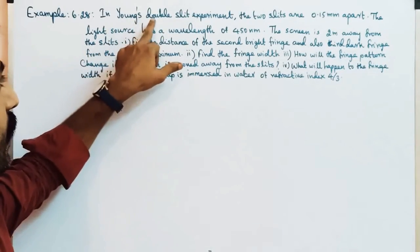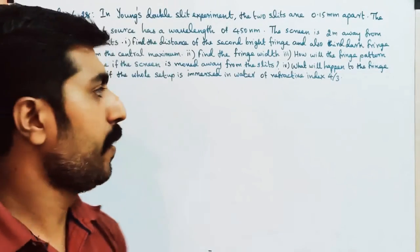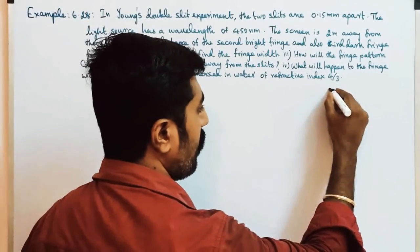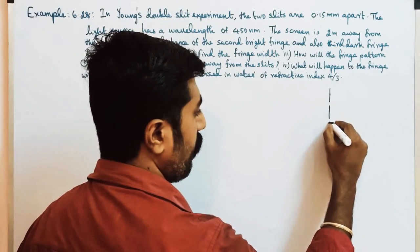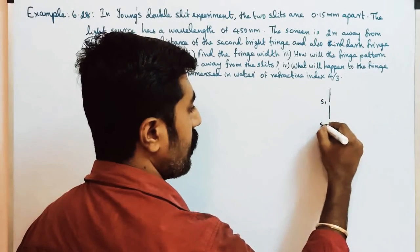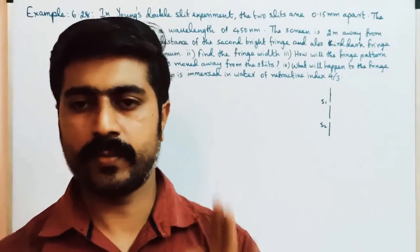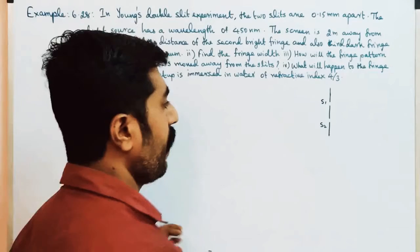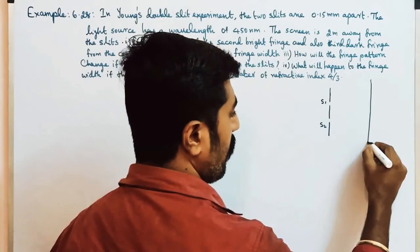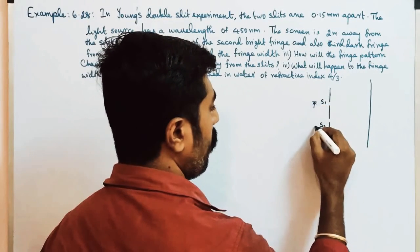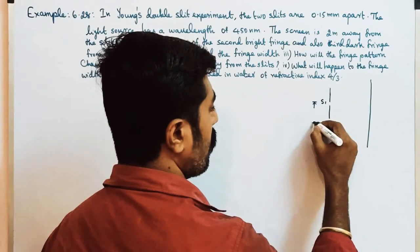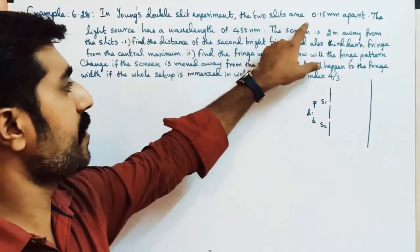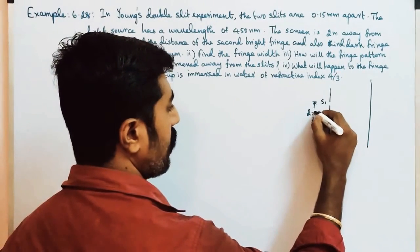This is a double slit experiment, so the problem is based on it. There are two slits — one is S1 and this is S2. The two slits act as coherent sources. The two slits are 0.15 mm apart.